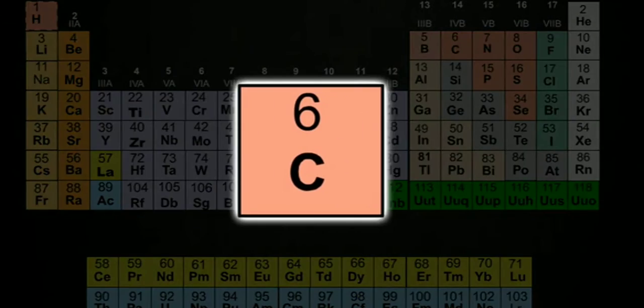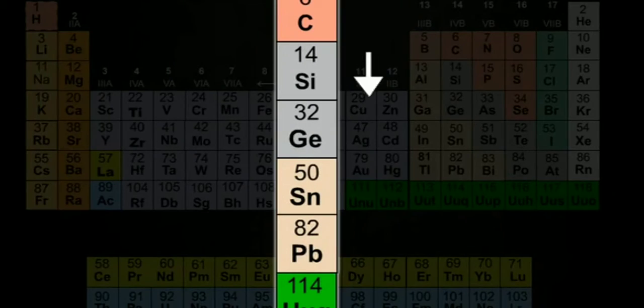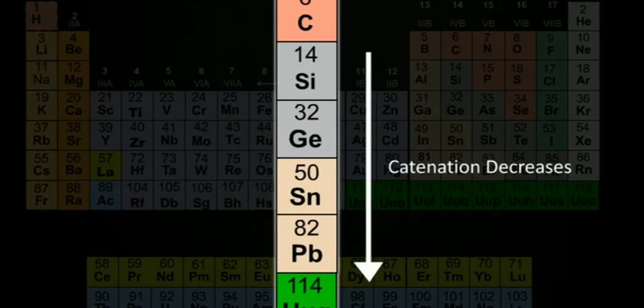Carbon shows maximum catenation in its group. On moving down the group 14, the catenation tendency decreases.